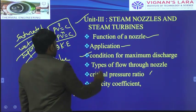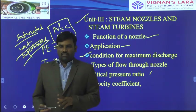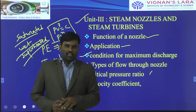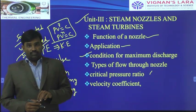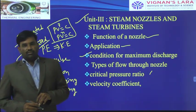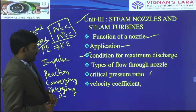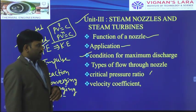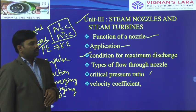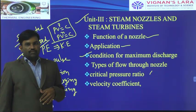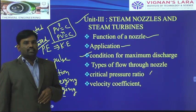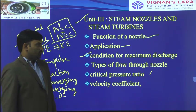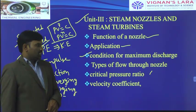The condition for maximum discharge: what is meant by discharge? It is the mass flow rate of steam from the nozzle body. How much mass flow rate of steam flows through the nozzle — that we estimate based on a derivation, and we will see that derivation in this unit. At a particular pressure ratio we get the maximum discharge, and we will see at which pressure ratio that occurs, and solve one derivation and some problems on that topic.